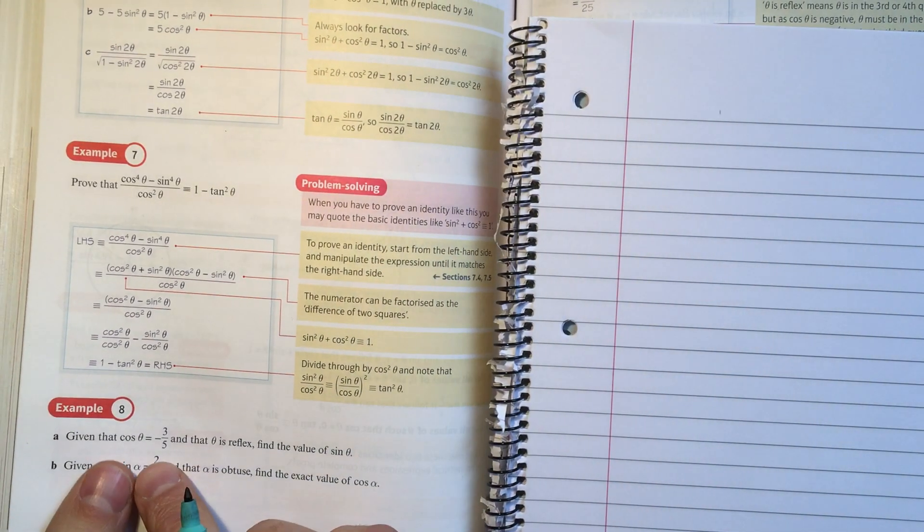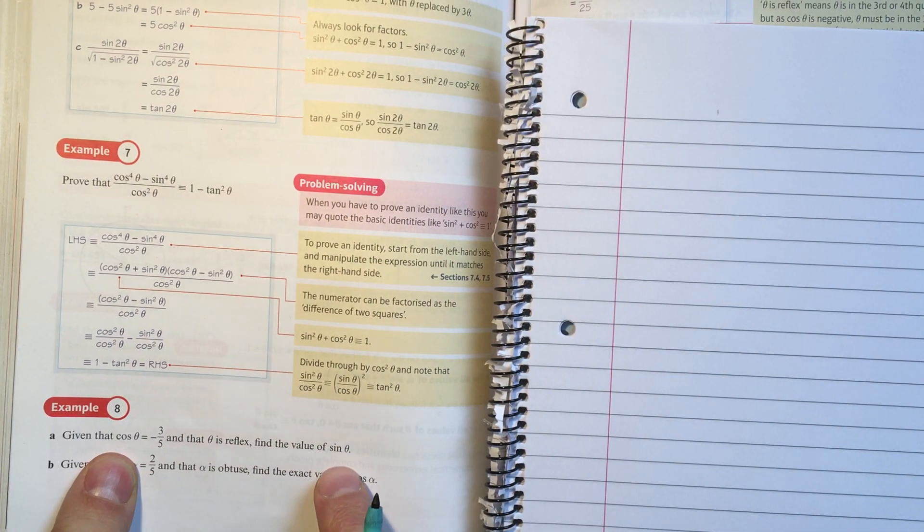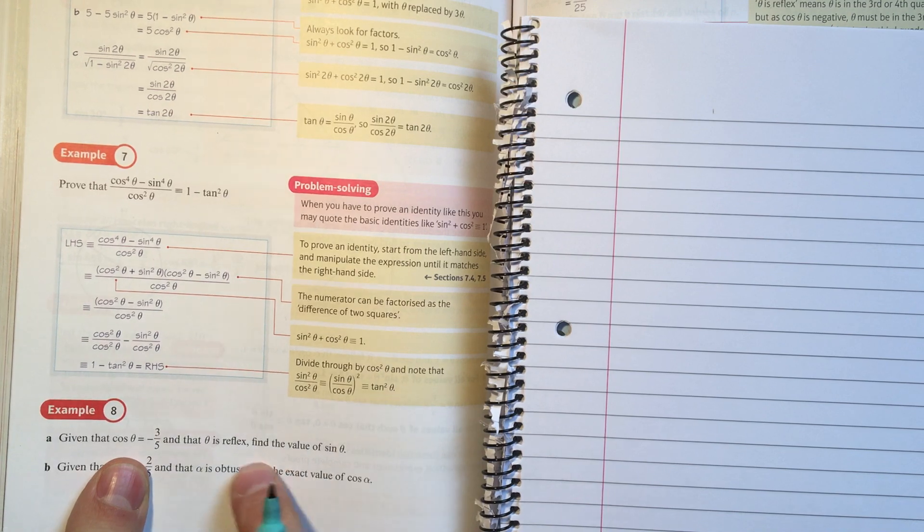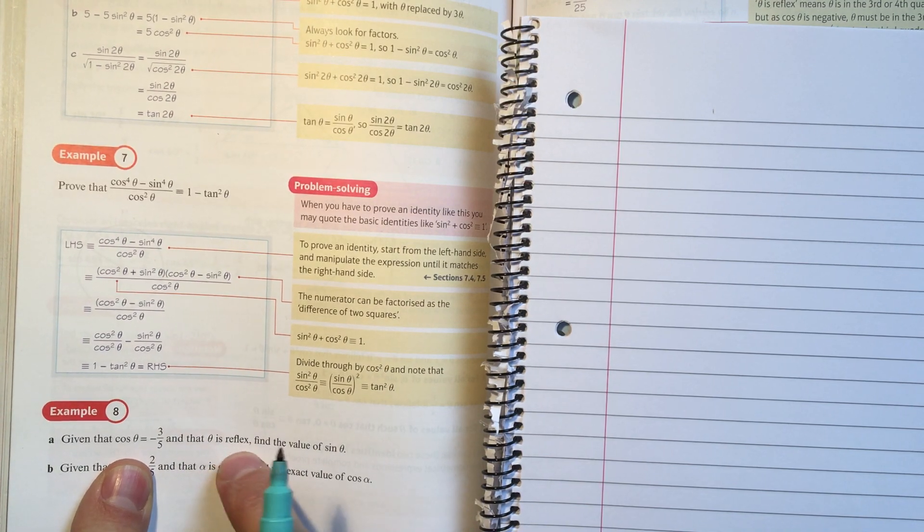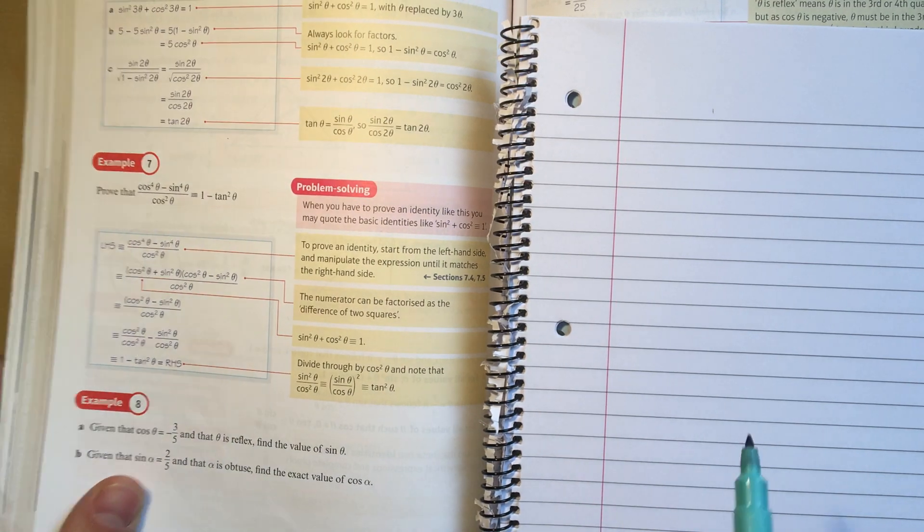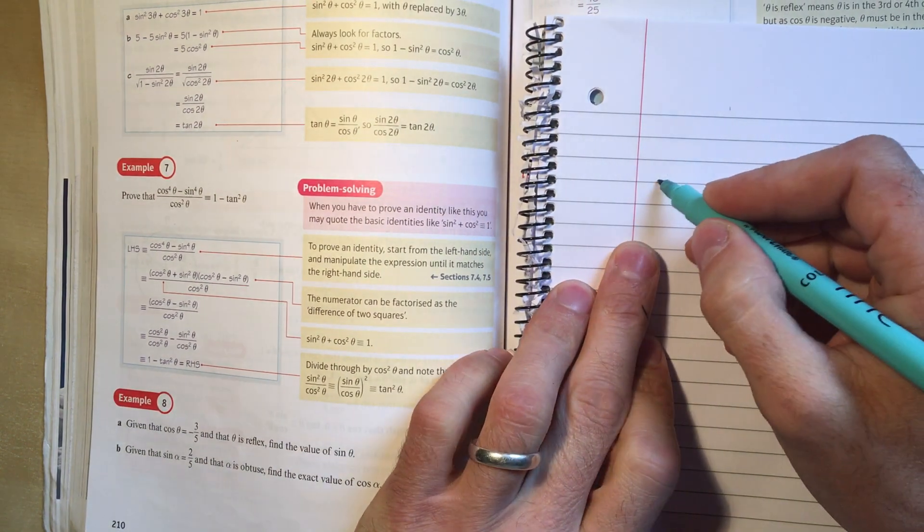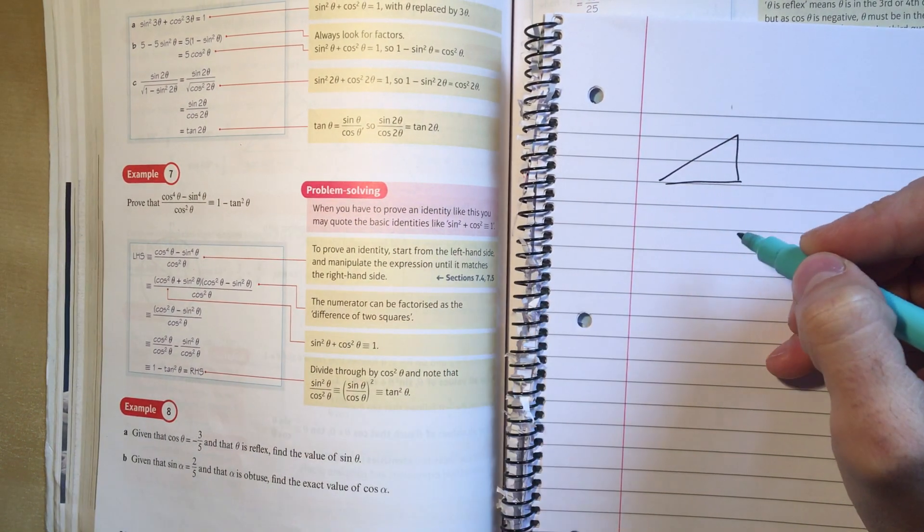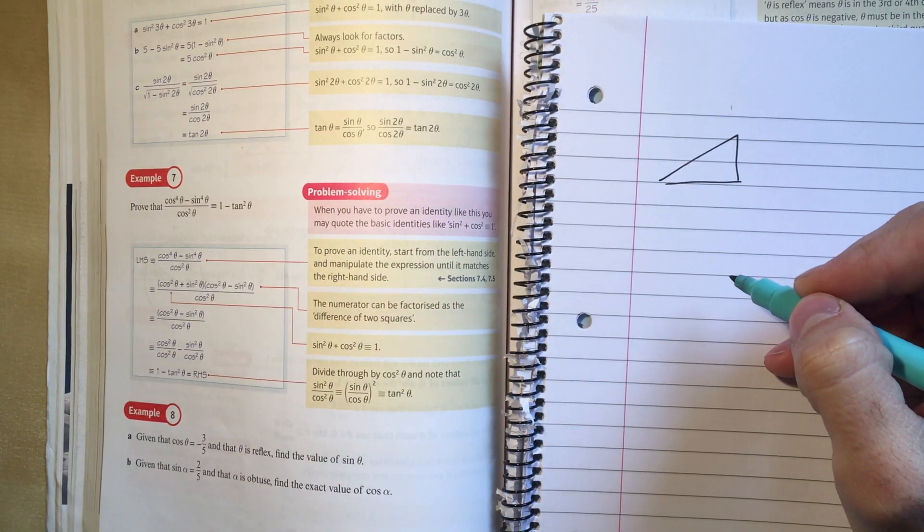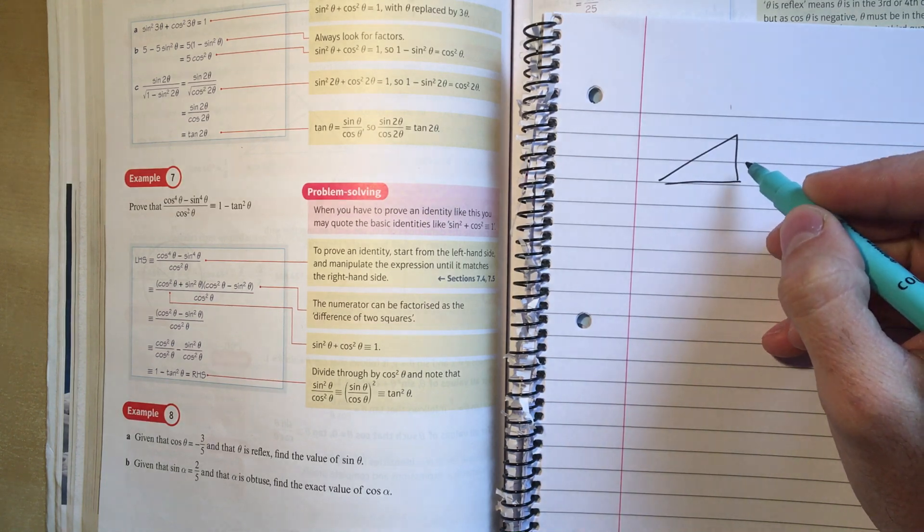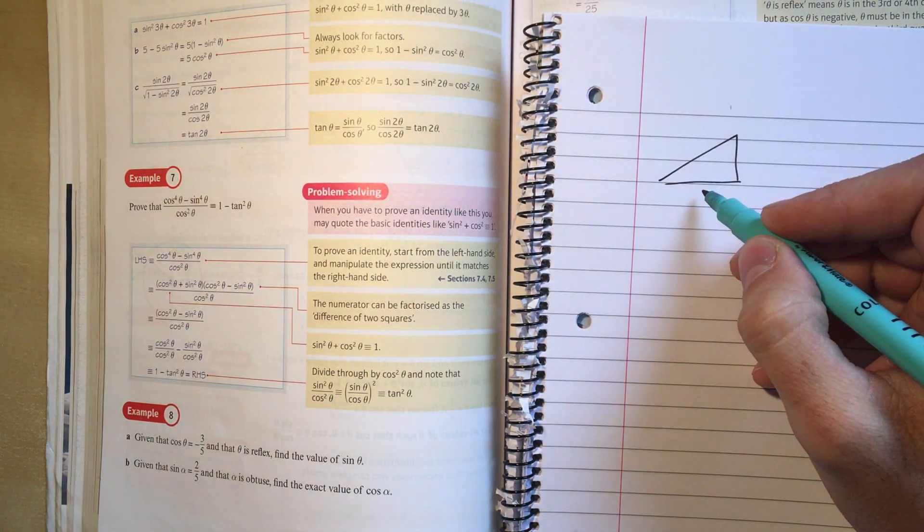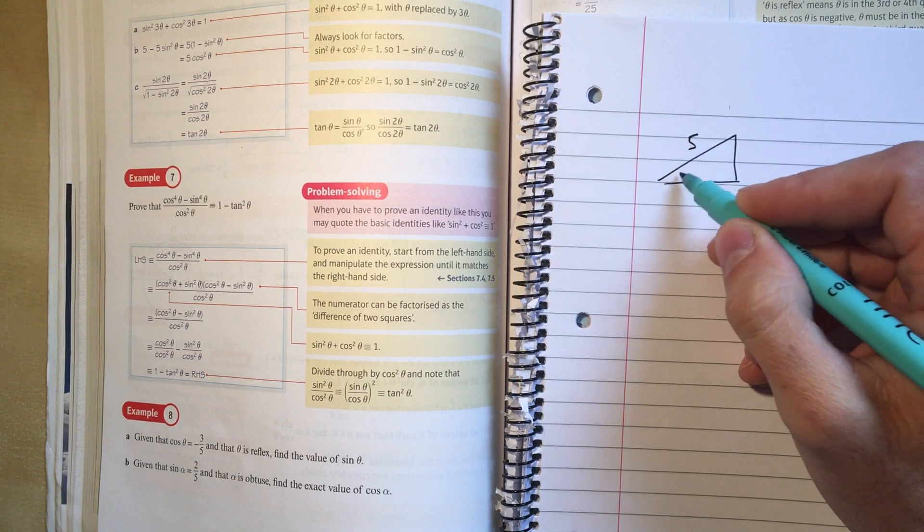What's happened in example 8 is they've told us the cosine and they want us to find the sine. And they've told us an extra bit of information, which is a range for the angle theta. The way that I'm going to suggest we deal with this is like this: I'm going to ignore the minus sign and ignore the fact that it's reflex. I'm going to say cosine is adjacent over hypotenuse, so three-fifths.